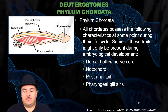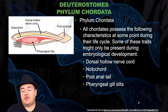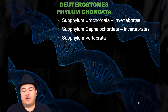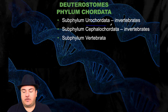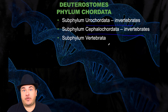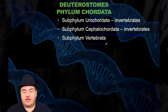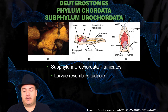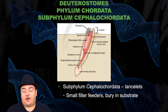Then we have the phylum Chordata. All chordates possess the following characteristics at some point during their life cycle — even if only during embryonic development: a dorsal hollow nerve cord, a notochord, a post-anal tail, and pharyngeal slits. Within phylum Chordata, the subphylum Urochordata — the tunicates — are invertebrates whose larvae resemble a tadpole. The subphylum Cephalochordata — the lancelets — are small filter feeders that bury themselves in substrate. The subphylum Vertebrata, which have vertebrae, will be covered in the next chapter.